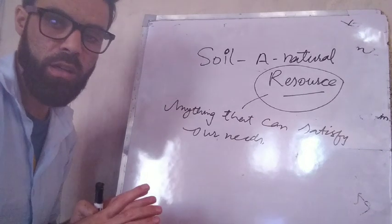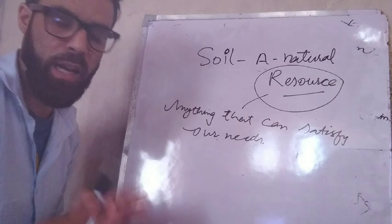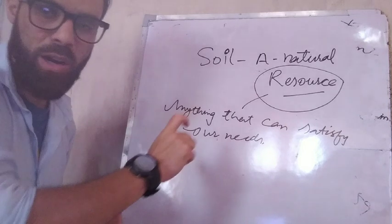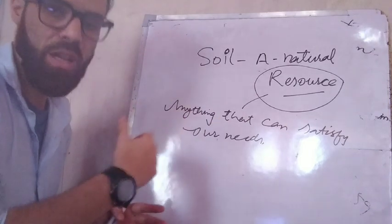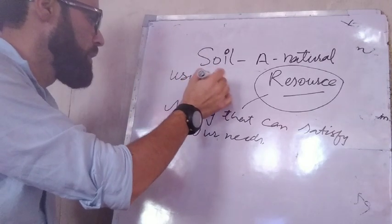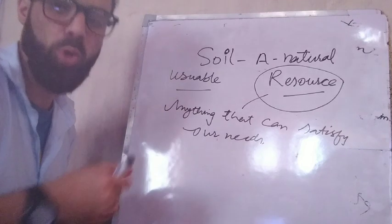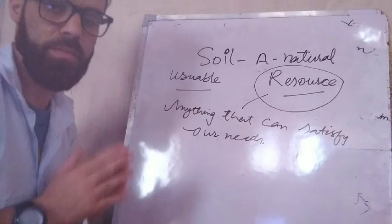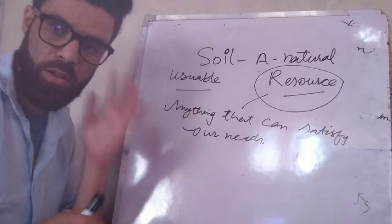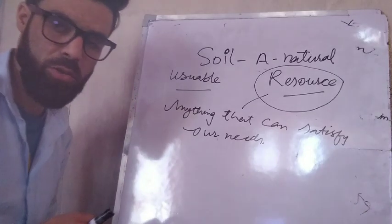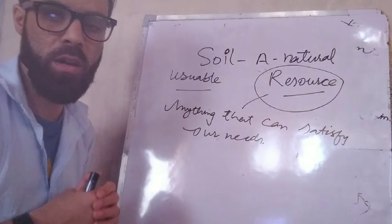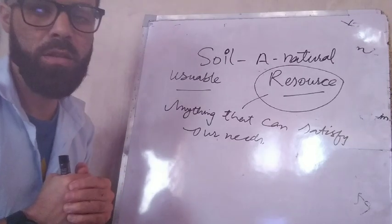In the world we have been surrounded by unlimited resources, and soil is also one of them. We can define resource as anything that can satisfy our needs — anything that is usable. For example, anyone who smokes cigarettes — the cigarette is a resource for that person. Resource also depends on the psychology of a person. Anyone who likes to drink wine, wine is a resource for that person, but not for the next person who won't pay for it.